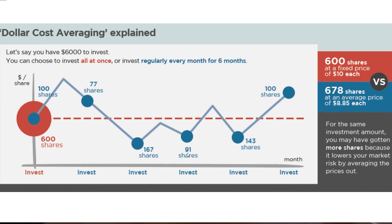The end result could potentially be that the person who invests over time accumulates more shares at an average lower price than the original person. Both people invested six thousand dollars, however one of them owns shares at a lower price. This isn't always the case, but it is one way to hedge against a volatile market — you could end up picking up shares at a lower price over time.